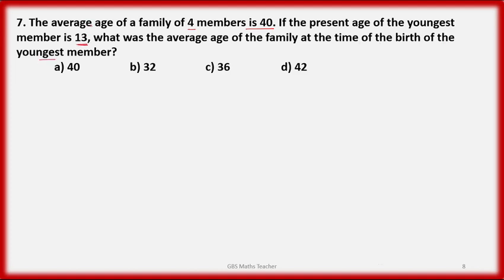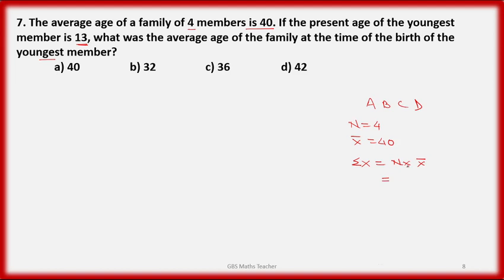13 years ago, the 4 members: total current age = 4 × 40 = 160. Now 13 years ago, each of the other members was 13 years younger. Since the youngest was just born, we consider only 3 remaining members. Subtract 13 × 4 = 52 from 160: 160 − 52 = 108.